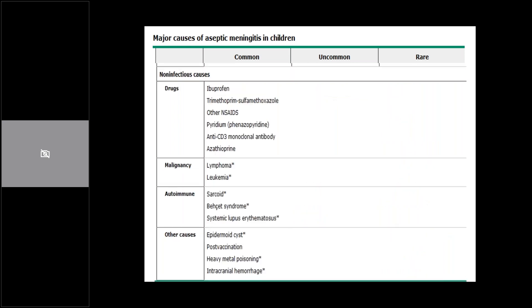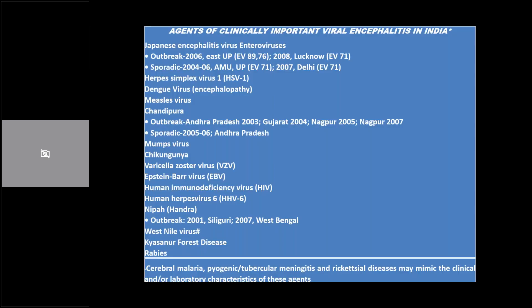Drugs like pyridium and azathioprine may cause this kind of inflammation — particularly important for patients receiving intrathecal chemotherapy, such as patients with acute lymphoblastic leukemia or AML with CNS penetration who require intrathecal chemo. Malignancies like lymphoma and leukemia can also have CNS seeding and manifest with nuchal rigidity, and that might be the first presentation of these diseases.